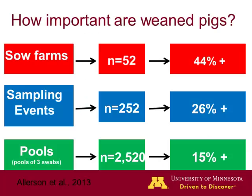How important is that wean pig population? We did testing in 52 farms — that's the work of Dr. Matt Allerson during his PhD at the university. He monitored 52 farms in collaboration with producers and veterinarians. He found that 44 of those farms would at some point in time produce positive pigs. So about half of the farms produce influenza-positive pigs at weaning, and a significant number of groups that were weaned were producing positive pigs.